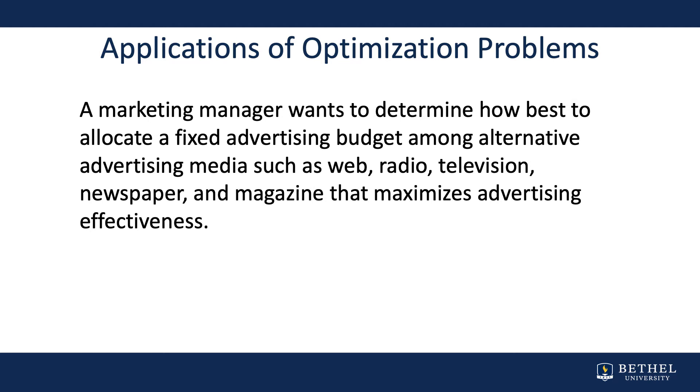A marketing manager wants to determine how best to allocate a fixed advertising budget among alternative advertising media — such as web, radio, television, newspaper, and magazine — that maximizes advertising effectiveness. In each of those examples, there is a clear objective, but there are also constraints that could limit the degree to which the objective can be pursued. Based on that criteria, you have an optimization problem.